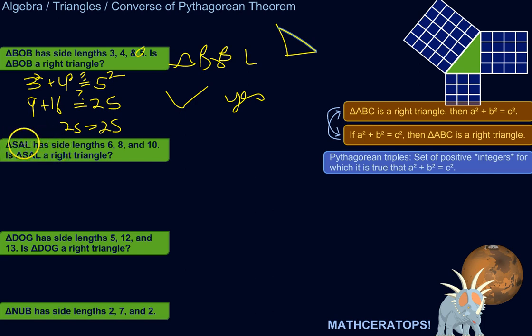Alright. So triangle SAL has side lengths 6, 8, and 10. By the way, 3, 4, and 5, you might have recognized that. That's actually the side lengths of this triangle over here. 3, 4, and 5 are what's called Pythagorean triples.